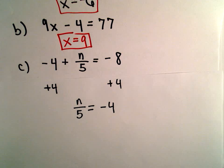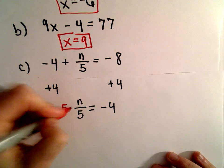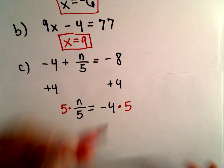And to get n by itself, since I've got n and I'm dividing by 5, I'm going to multiply both sides by 5.